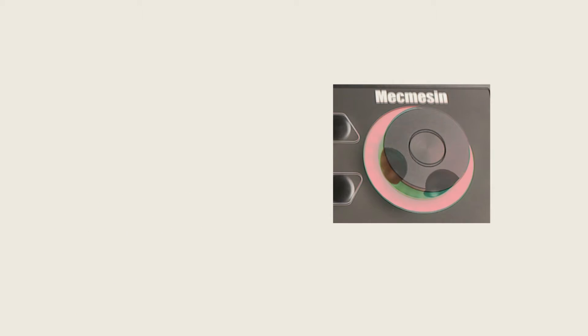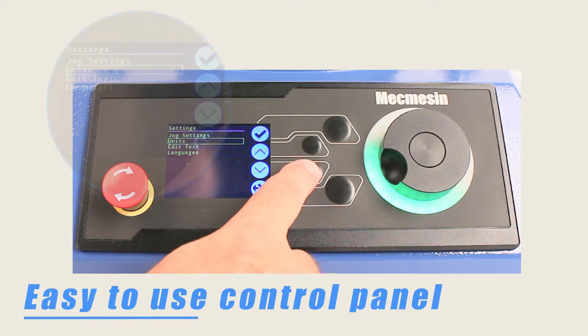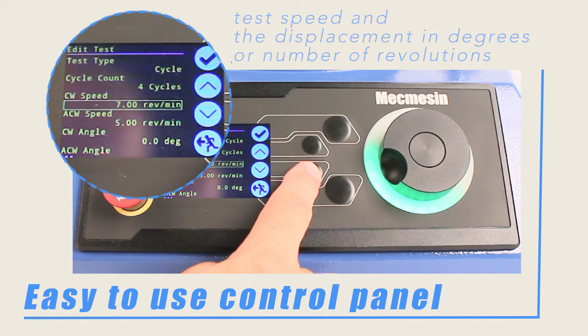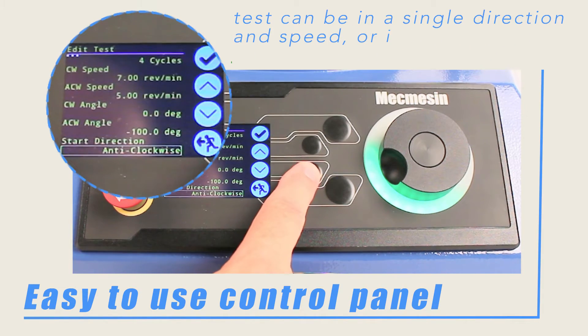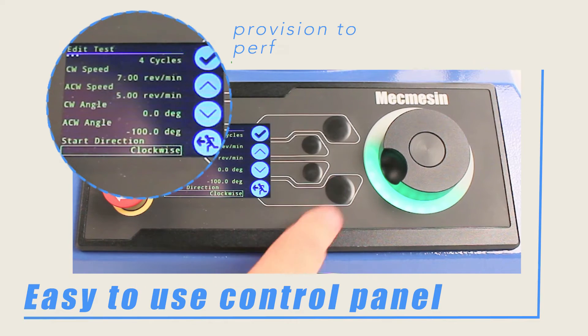The control panel can be used to set and display the test speeds and the displacement in degrees or number of revolutions with digital accuracy. The test can be in a single direction or in both directions and at different speeds. There is also the provision to perform cyclic tests.